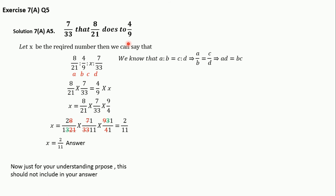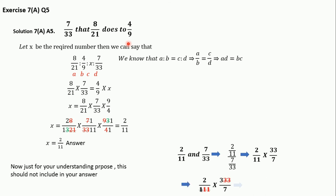Now just for your understanding — this should not be included in your exam answer. We have x = 2/11 and 7/33. If we solve 2/11 with 7/33, the answer comes out to 6/7, which is the same as when we solve 8/21 to 4/9. This confirms our answer is correct.